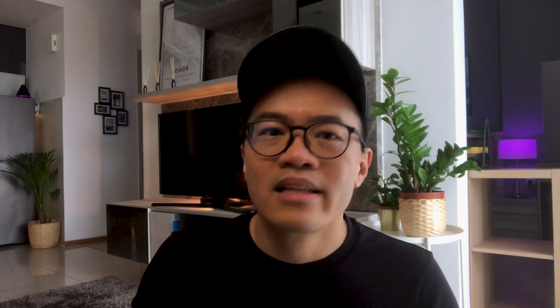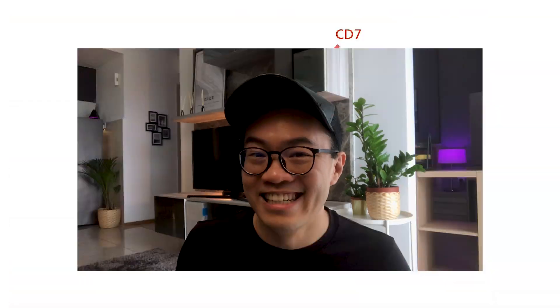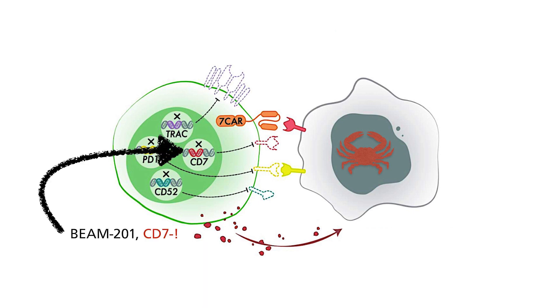Another question: the CAR-T cells are T-cells, right? Wouldn't they kill themselves since they also have CD7? This is where BEAM's ingenious multiplex base editing comes in. Not only do BIM-201 cells recognize CD7, they also have BEAM's trademark base editing to shut down their own CD7. That means they will kill the cancer cells without killing themselves — and that is critically important.